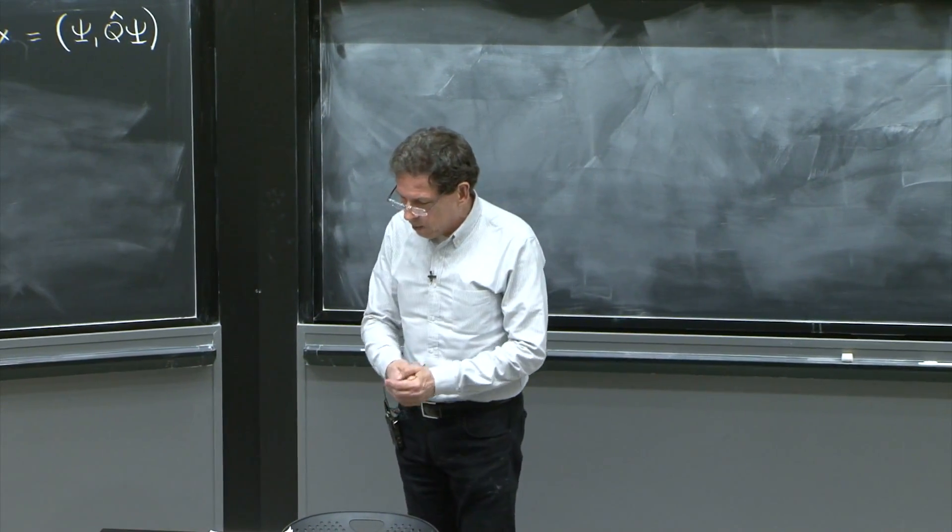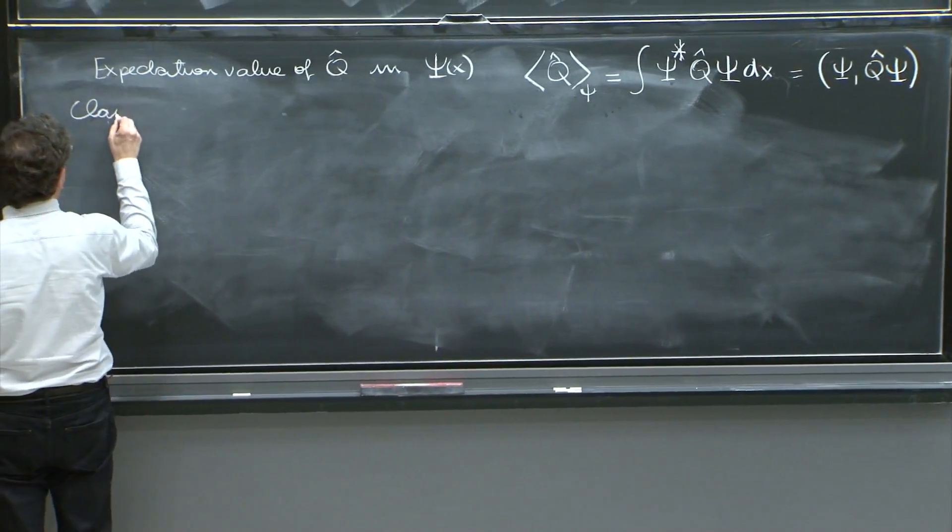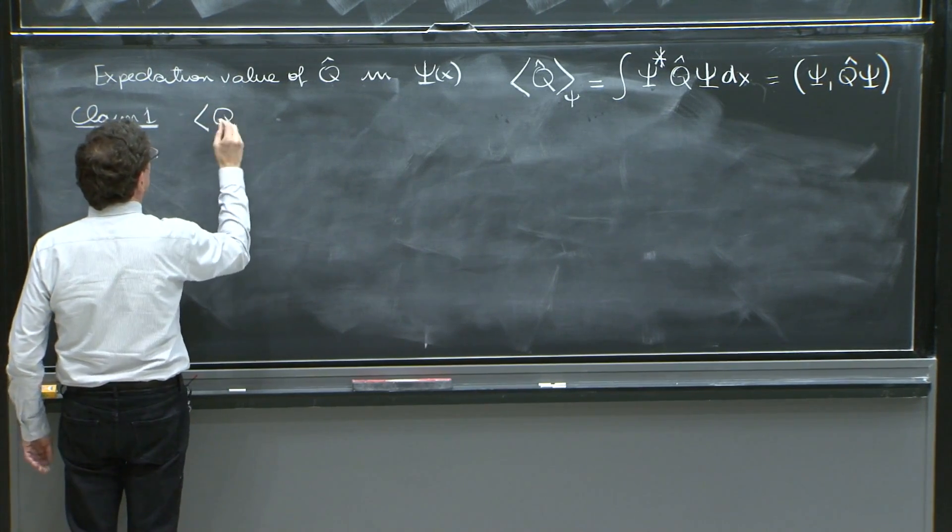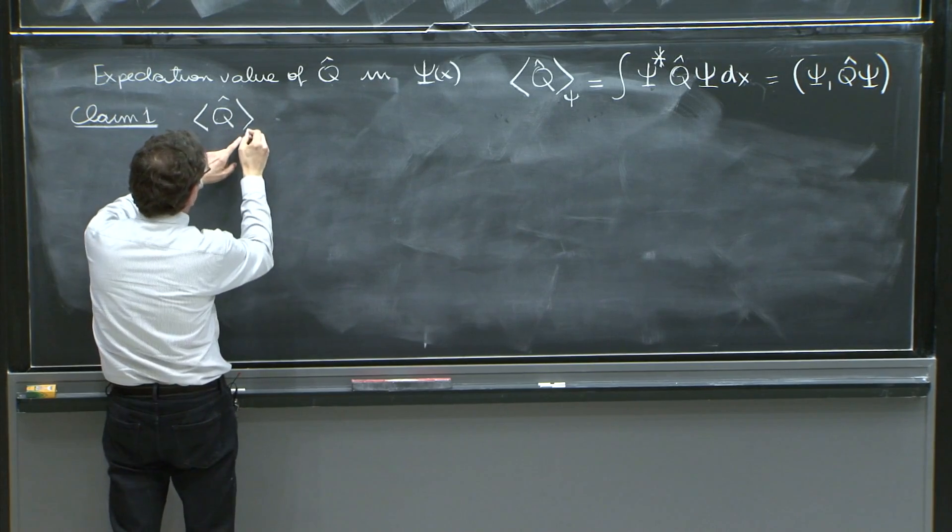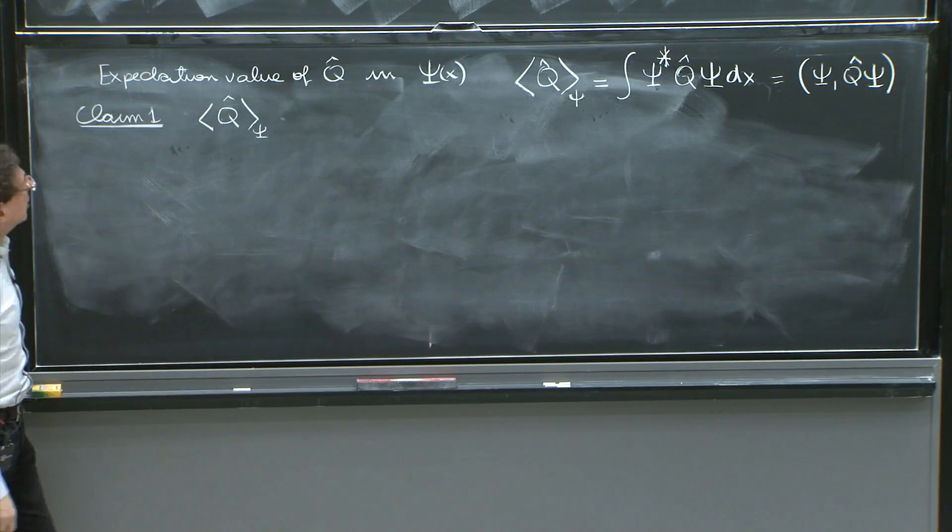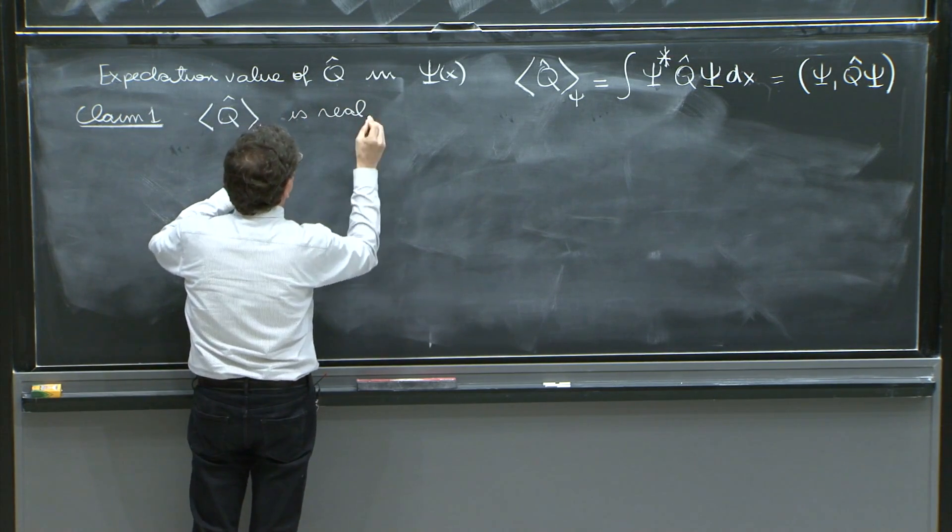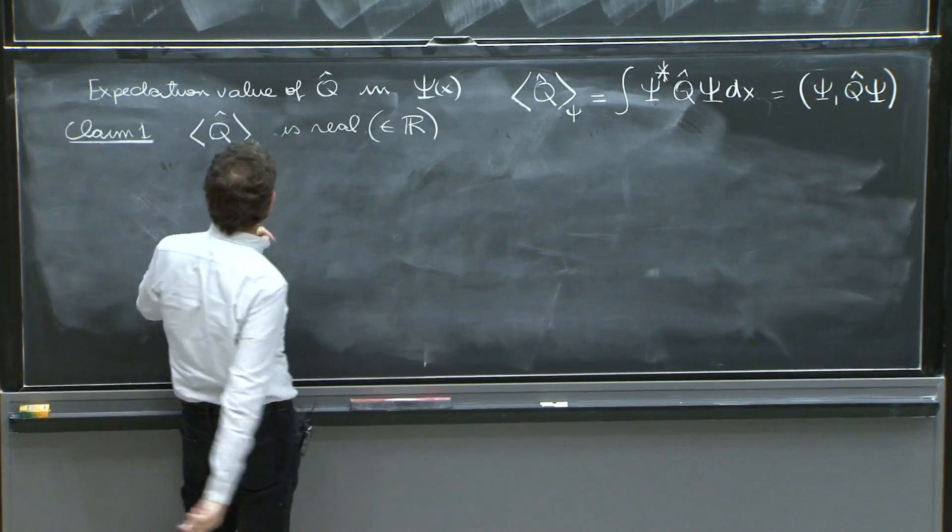So let's begin with some claims. Claim number one: The expectation value of Q, with Q Hermitian, is real. It belongs to the real numbers. That's an important thing.